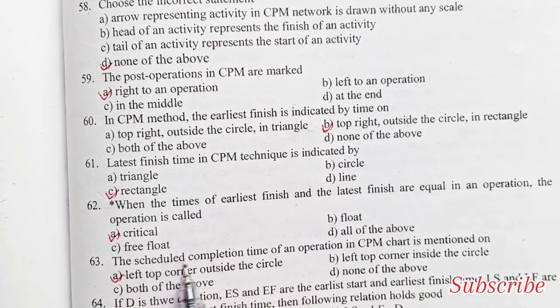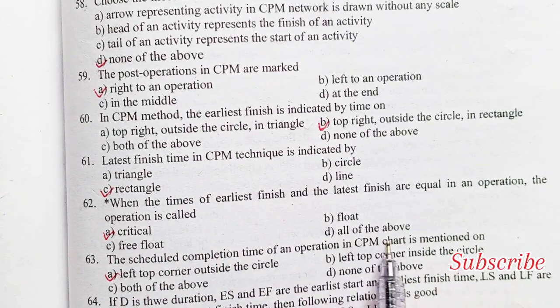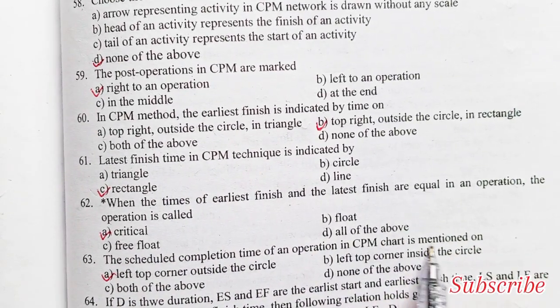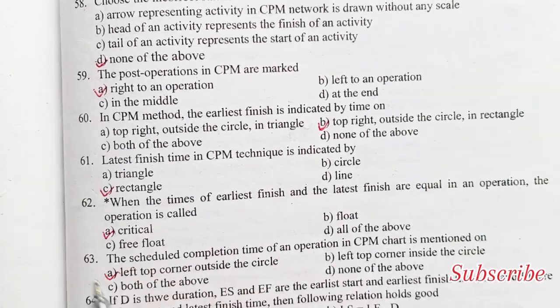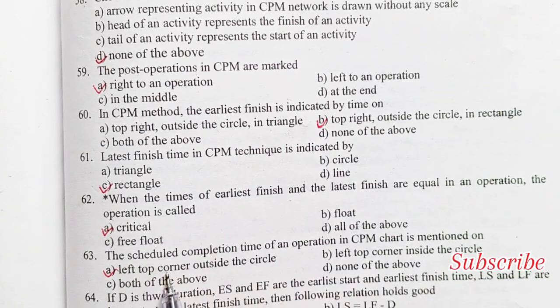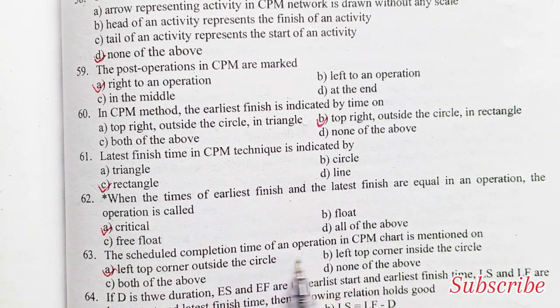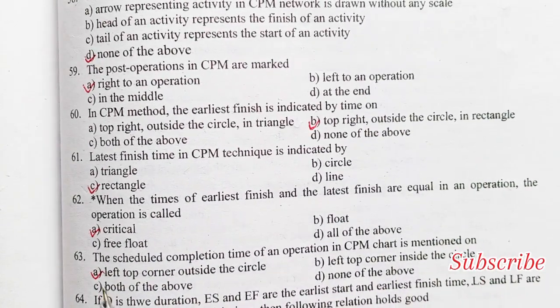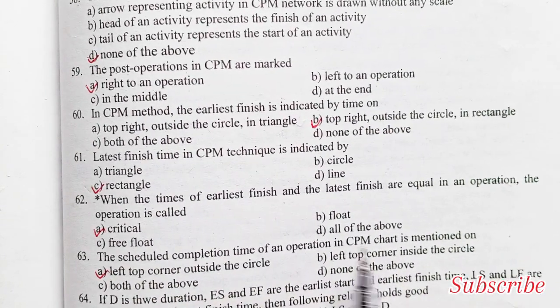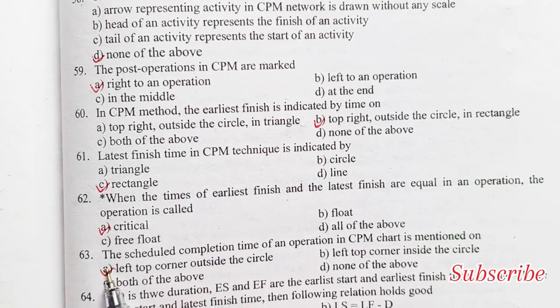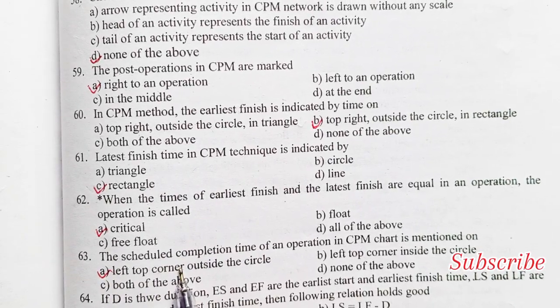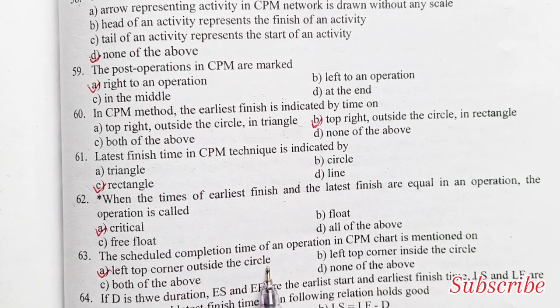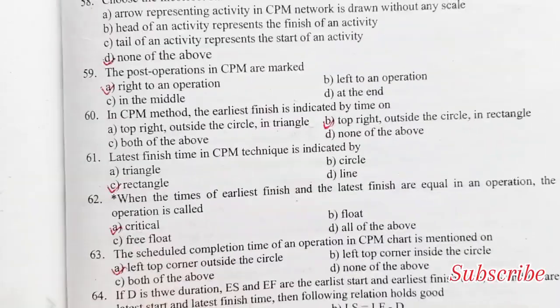The schedule completion time of an operation in a CPM chart is mentioned on: left top corner outside the circle, left top corner inside the circle, or both. Option A is the right answer — left top corner outside the circle.